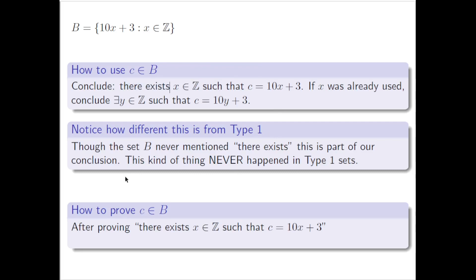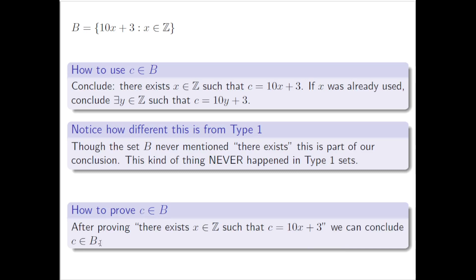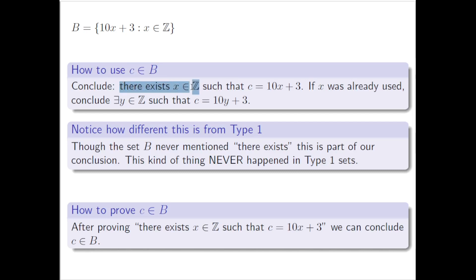Finally, how do you prove C is in B? Just like with Type 1, it's the reverse of using C ∈ B. After you prove 'there exists an x in ℤ such that C = 10x + 3,' then you can conclude that C is in B. To summarize: C ∈ B if and only if there exists an x in ℤ such that C = 10x + 3.